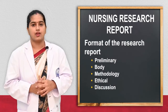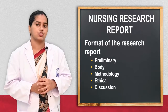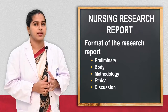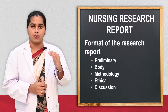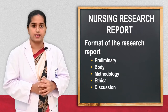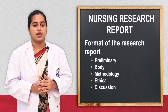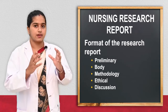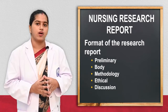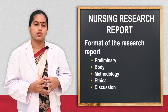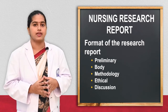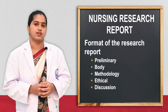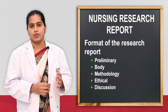Next we will see the format of a nursing research report. The first section is the preliminary page — they have to include the work done, bona fide certificate, acknowledgement, list of figures, and list of tables, and these have to be arranged. Then next is the body. The body consists of introduction of the research, need for the study, background of the study, the research problem, objectives, assumptions, variables, and hypothesis.